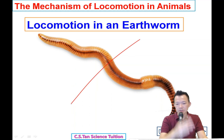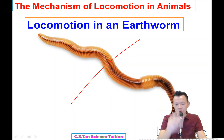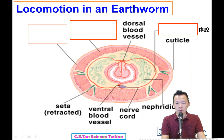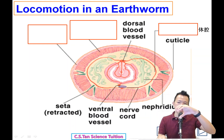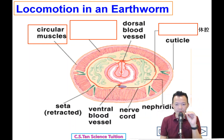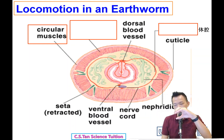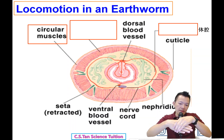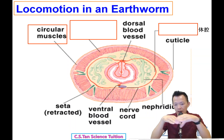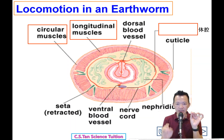If you cut or break an earthworm, you can see its body structure. The earthworm has a layer of muscle called circular muscle on the outside, and underneath that is another layer called longitudinal muscle.